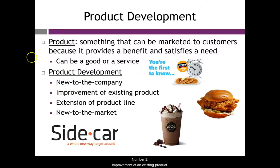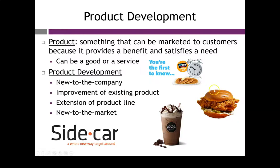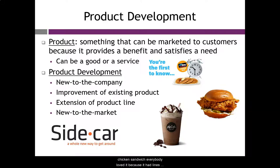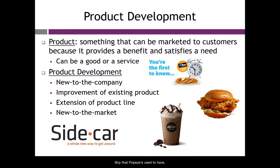Number two is improvement of an existing product — something you already had, but you made it better, enhanced it. A good example is Popeye's chicken sandwich. In the summer of 2019, Popeye's introduced that new chicken sandwich, everybody loved it, and there were lines out the door. That replaced a chicken po'boy that Popeye's used to have, which obviously wasn't nearly as popular. They came up with an improvement of an existing product, and it really worked out very well for them.